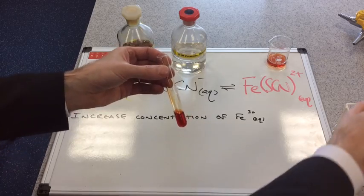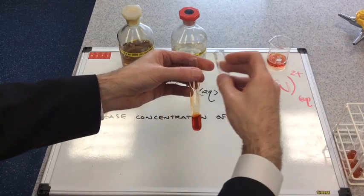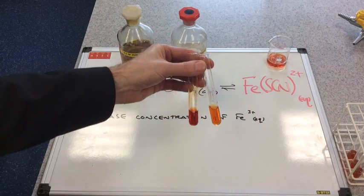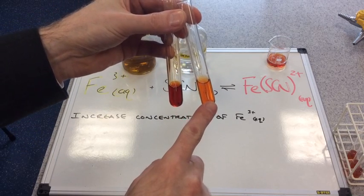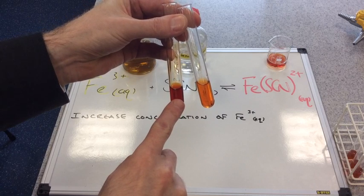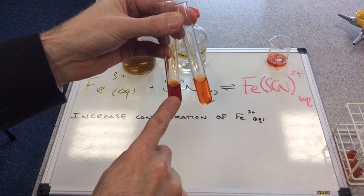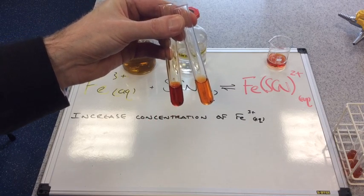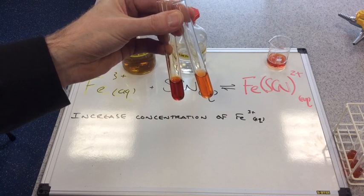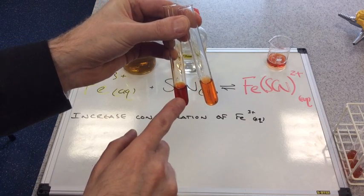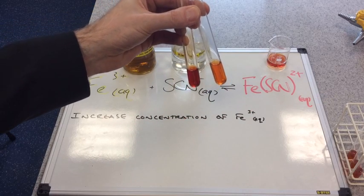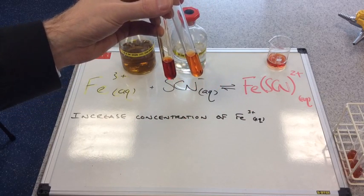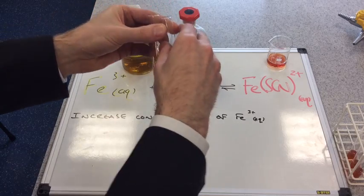If I bring the control tube in now and hold them side by side, hopefully you can see that the control tube is lighter than the tube that's just had the extra drop of iron 3 plus ions in. So you can see this has got darker. The equilibrium must have moved this way to the right to minimize the change.